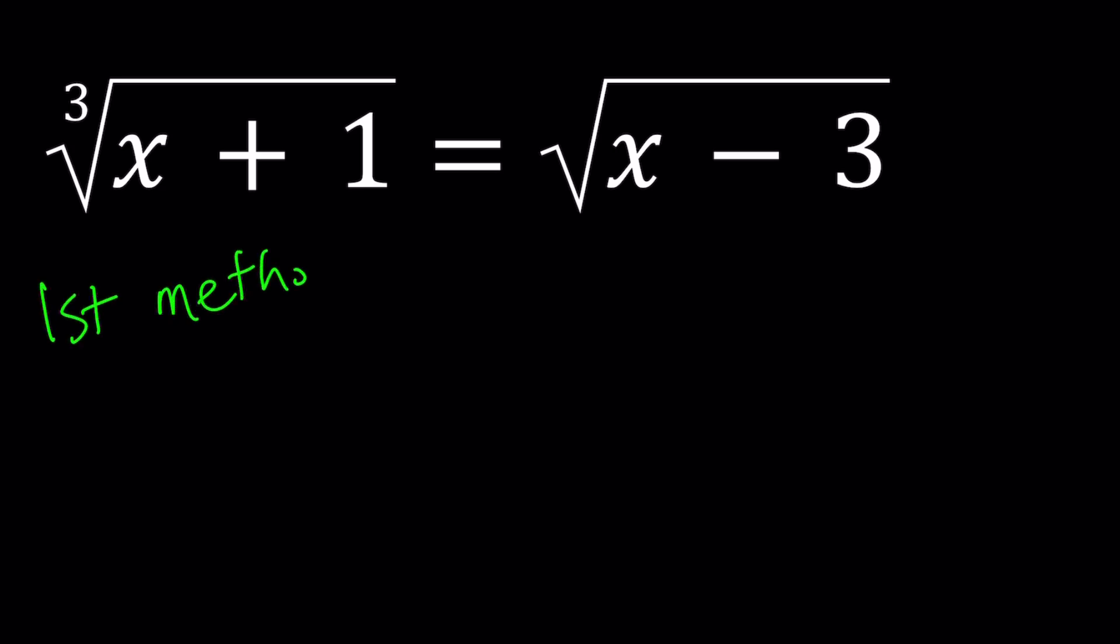I'm going to present two methods and then show you two different graphs. For my first method I'd like to go brute force and raise both sides to the 6th power. The reason for that is I have a cube root and a square root which is a 2 that's not written. So their least common multiple is 6. If I raise both sides to the 6th power then I'll get rid of both of the radicals.